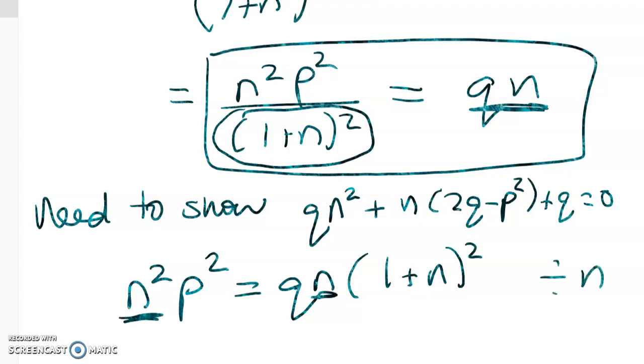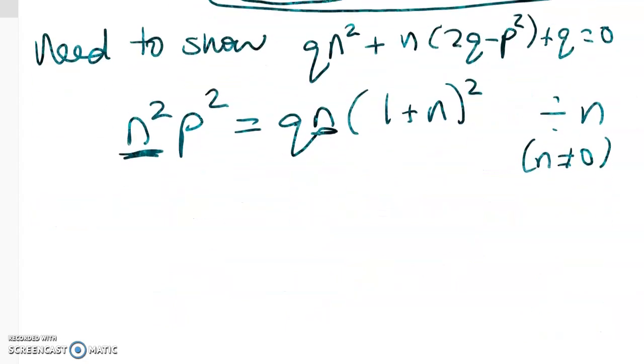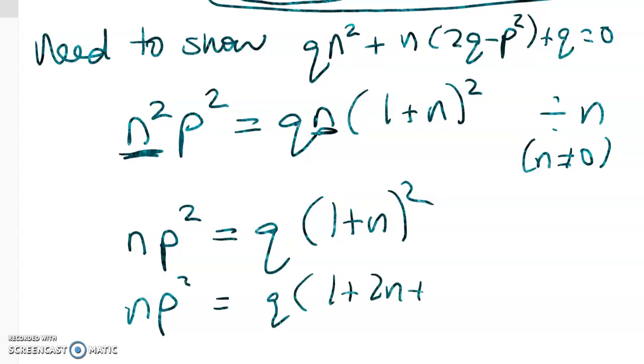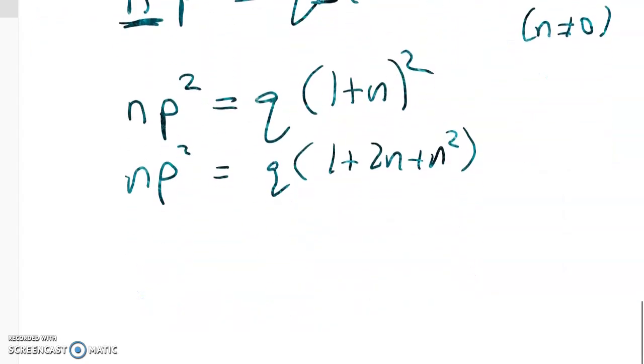We're going to have n squared p squared is equal to qn times 1 plus n squared. And here I've got n squared here, and I've got n here. So I can divide by n, and I can do that because I know n is not equal to 0. That leaves me with n p squared is equal to q times 1 plus n squared.